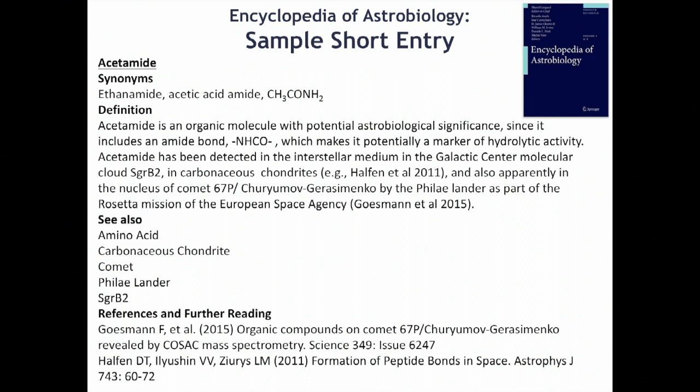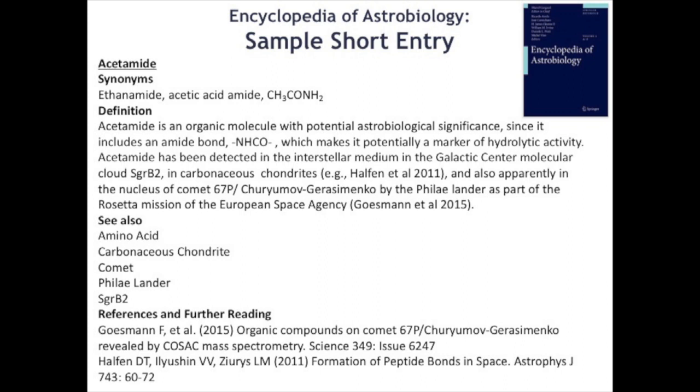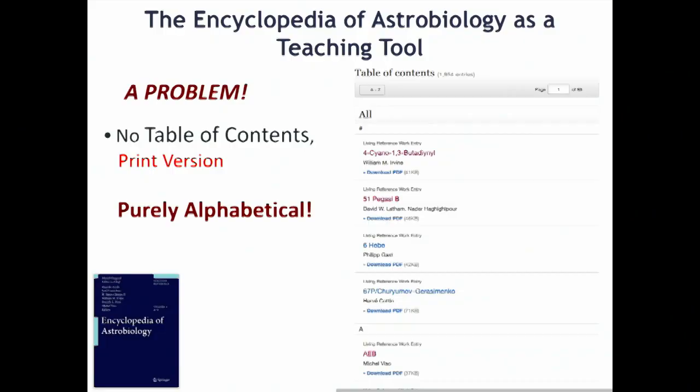The problem with the current version of the encyclopedia is that it has no table of contents elements at the beginning. It's purely alphabetical — it begins with this particular interstellar radical. Alphabetically, things are listed by number first, but then it goes to the A's, B's, C's, and D's. This is not very useful if you come to it and say, what really is astrobiology? What does it cover?